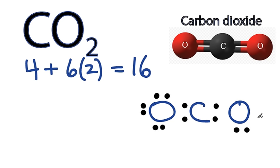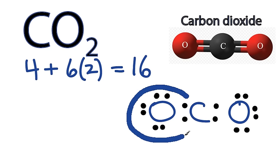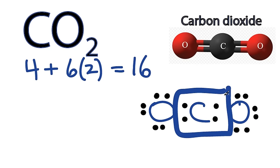That looks pretty good. Let's check and see if we have octets. This oxygen here has 8, and this oxygen here has 8. They both have octets. But the carbon only has 4 valence electrons. It doesn't have an octet.